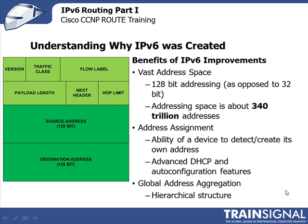Another benefit of IP version 6 is the address assignment mechanisms. A device can actually auto-configure its own address — it doesn't have to necessarily rely on DHCP to give it its addresses; it can calculate it on its own. In fact, there are a number of advanced DHCP and auto-configuration features surrounding and regarding the whole business of address assignment.